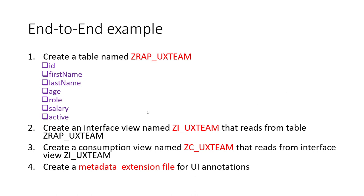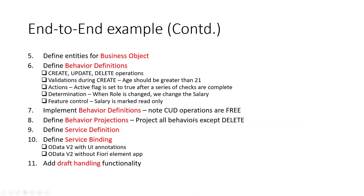In the previous session, we created the table, we created the interface view, we created the consumption view, and we also created a metadata extension file. So in this video, we'll continue with the end-to-end example. We'll do the business object, define entities for the business object, define the behavior definition, and implement the behavior definitions — steps 5, 6, and 7.